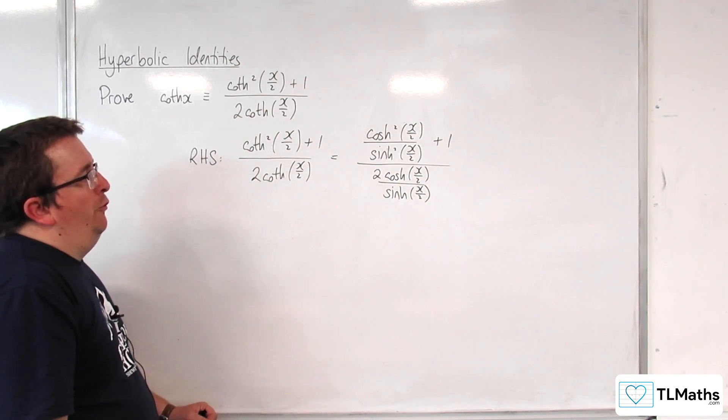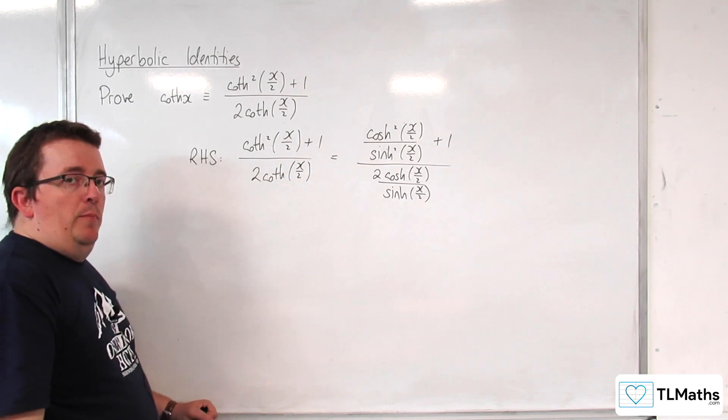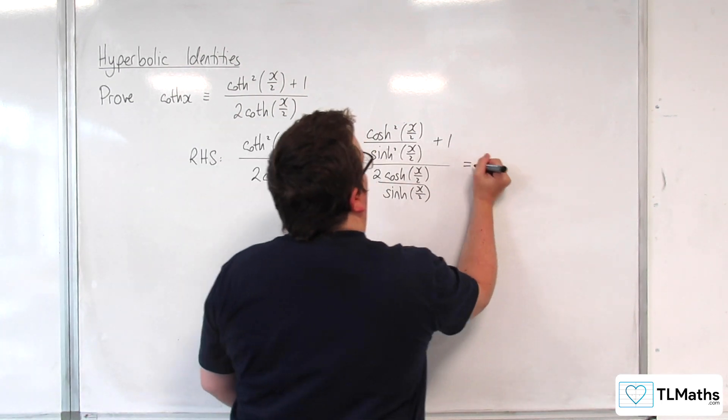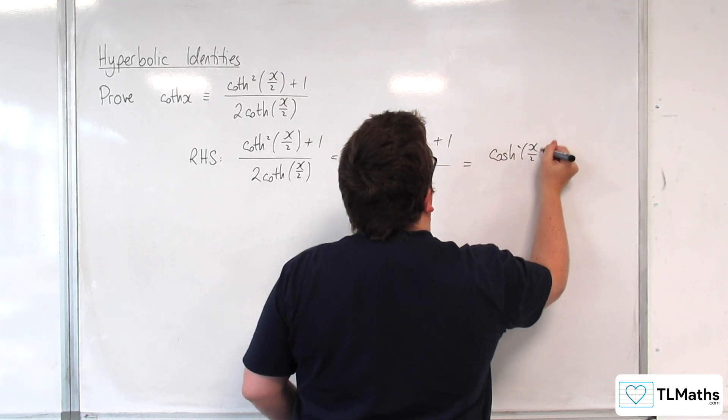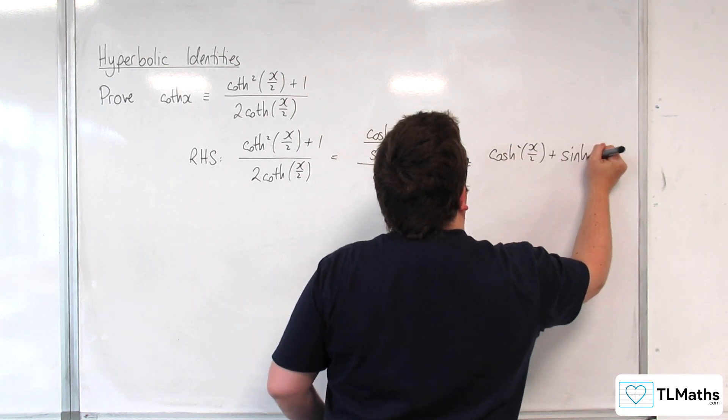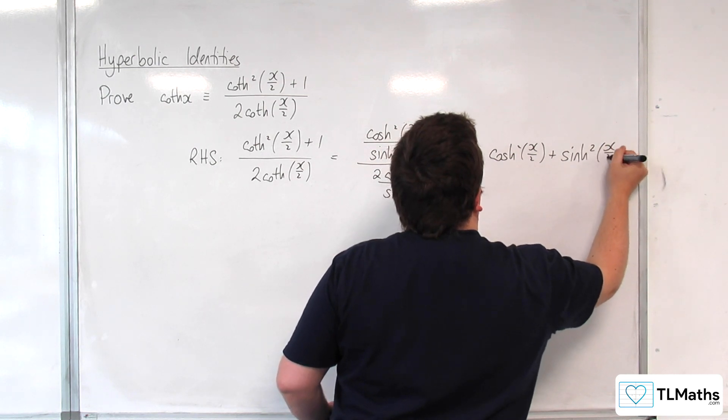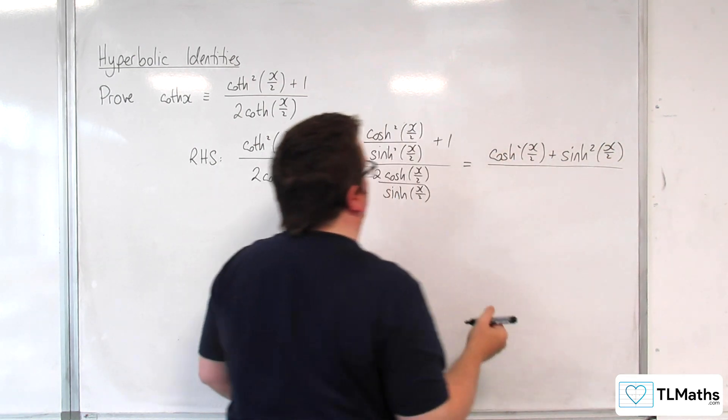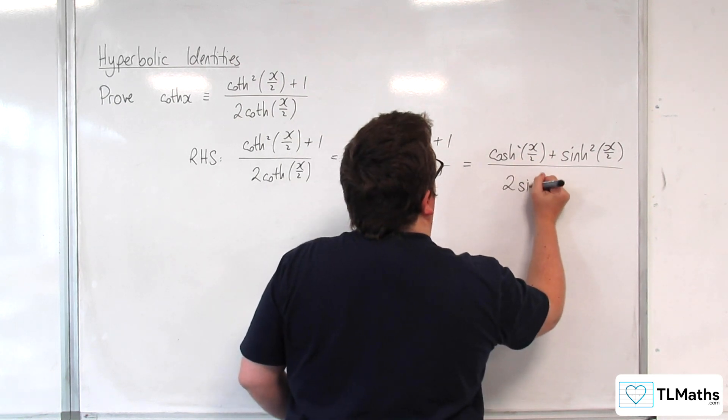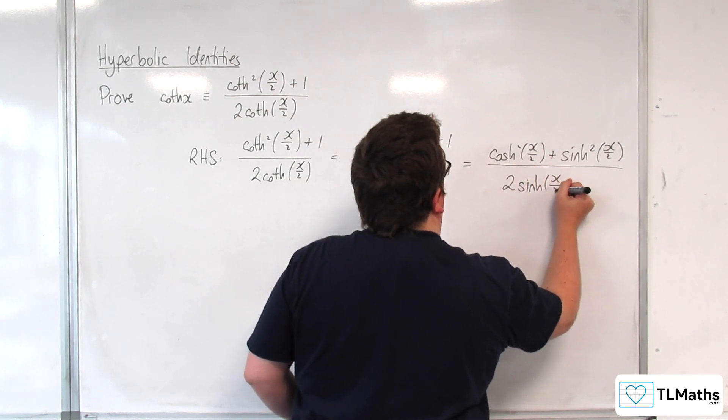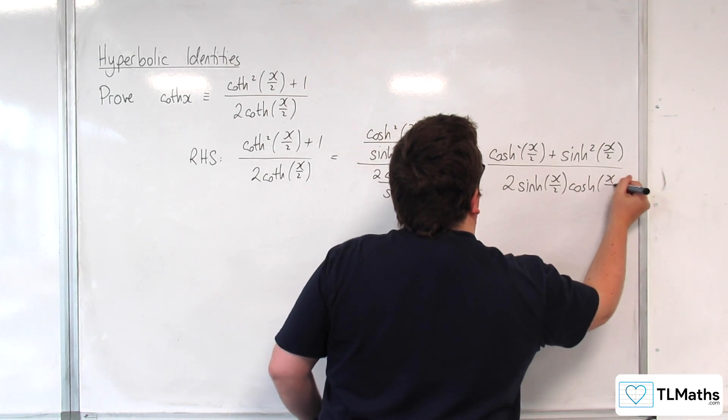Now I'm going to multiply numerator and denominator by sinh squared of x over 2. So we're going to get cosh squared x over 2 plus sinh squared x over 2, all over in the denominator, we're going to have 2 sinh x over 2 cosh x over 2.